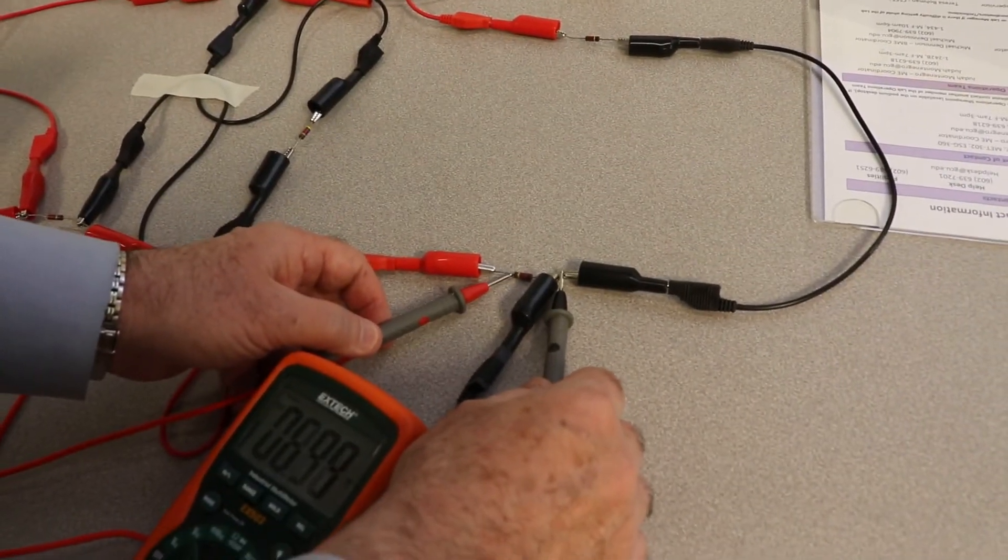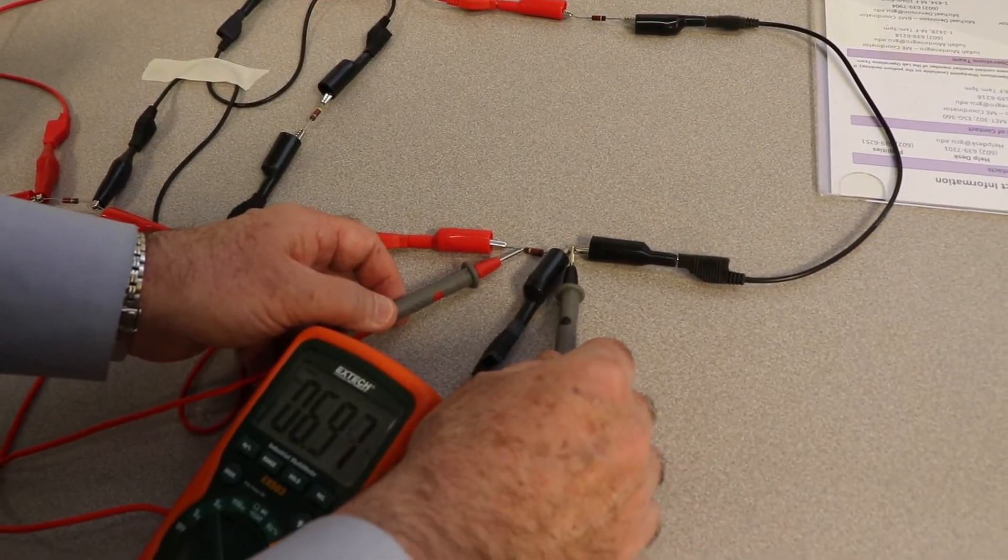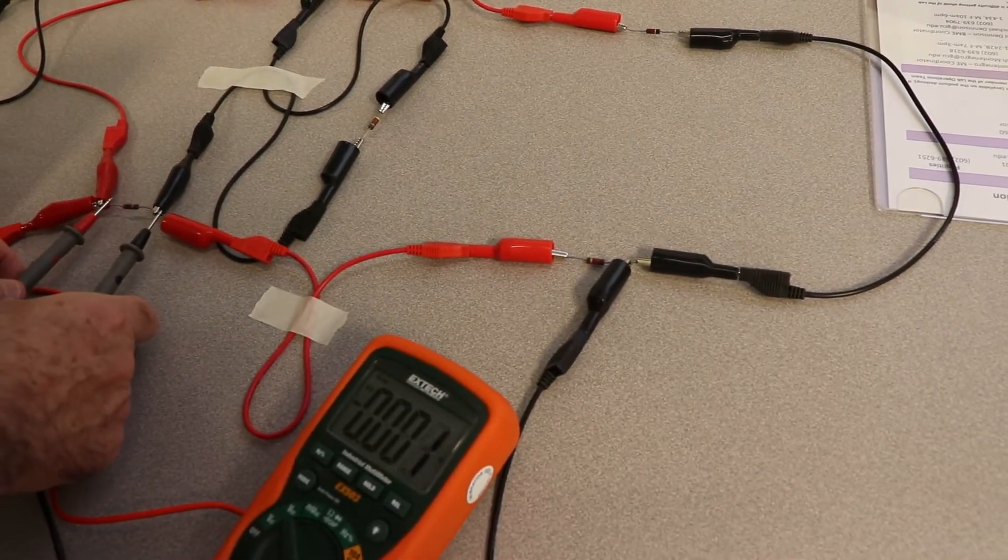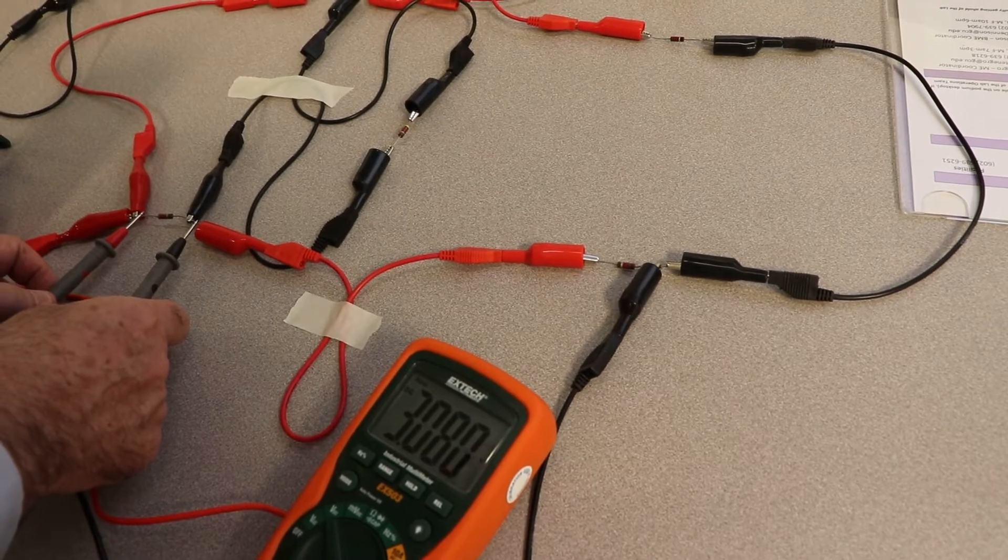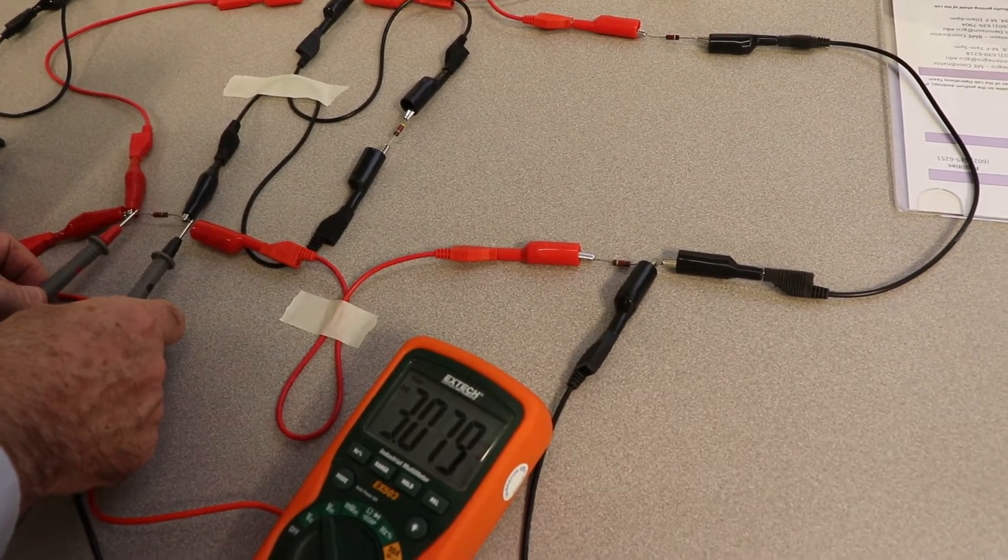And resistor 2 is 6.98 volts. Resistor 1, resistor 1 is really important by the way. 3.079, 3.080. You can see three significant figures.